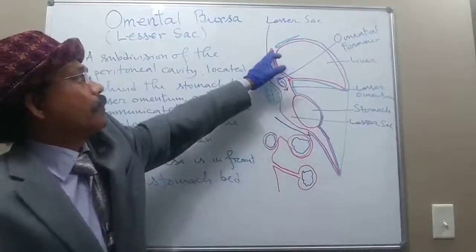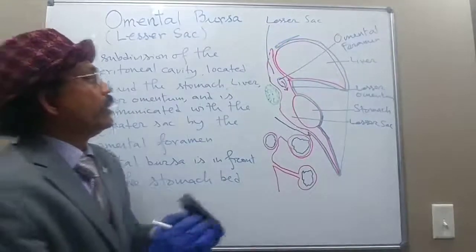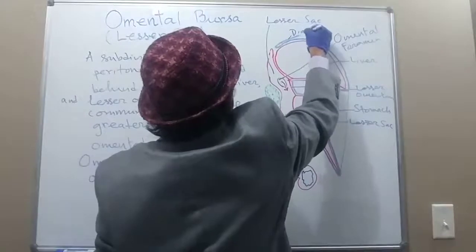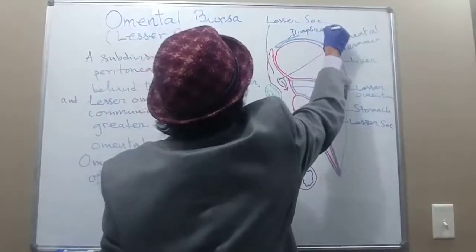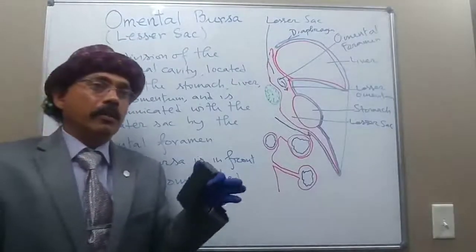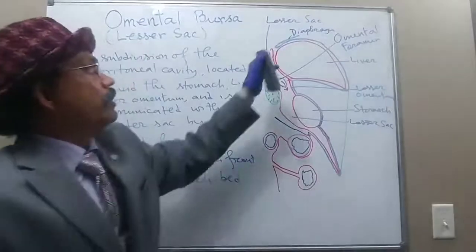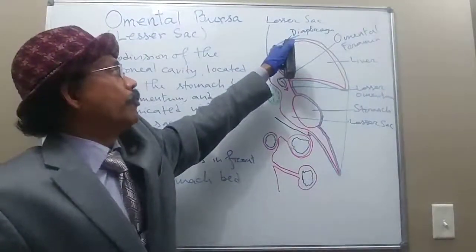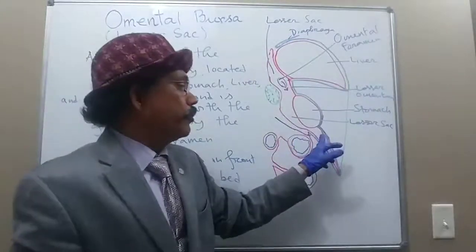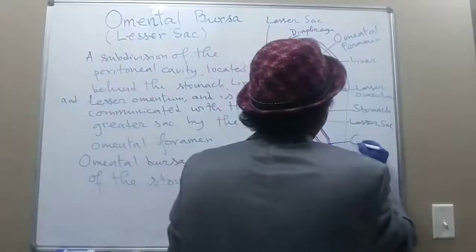Above, the lesser sac has an upper recess that is confined by the diaphragm and the posterior layer of the coronary ligament. Below, it has a lower recess that is communicated with the fold of the greater omentum.